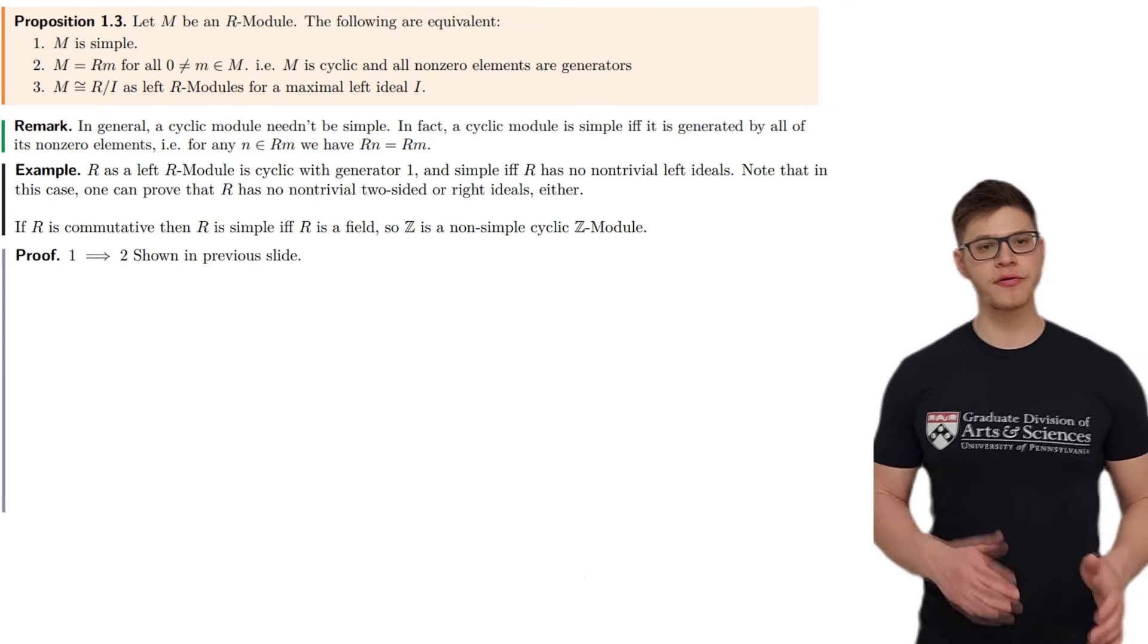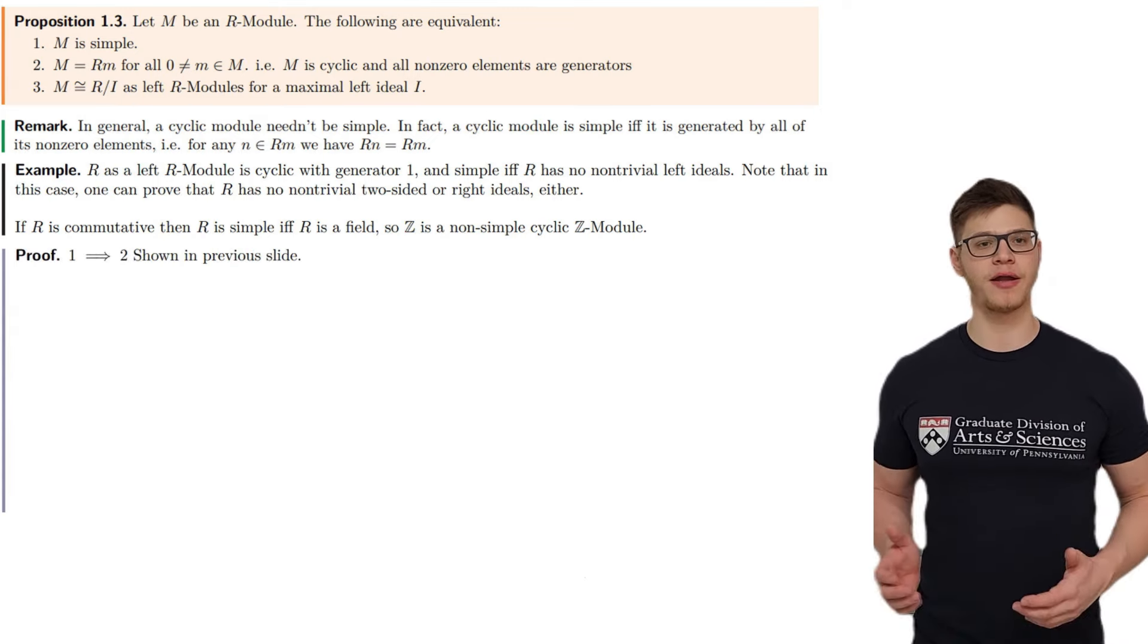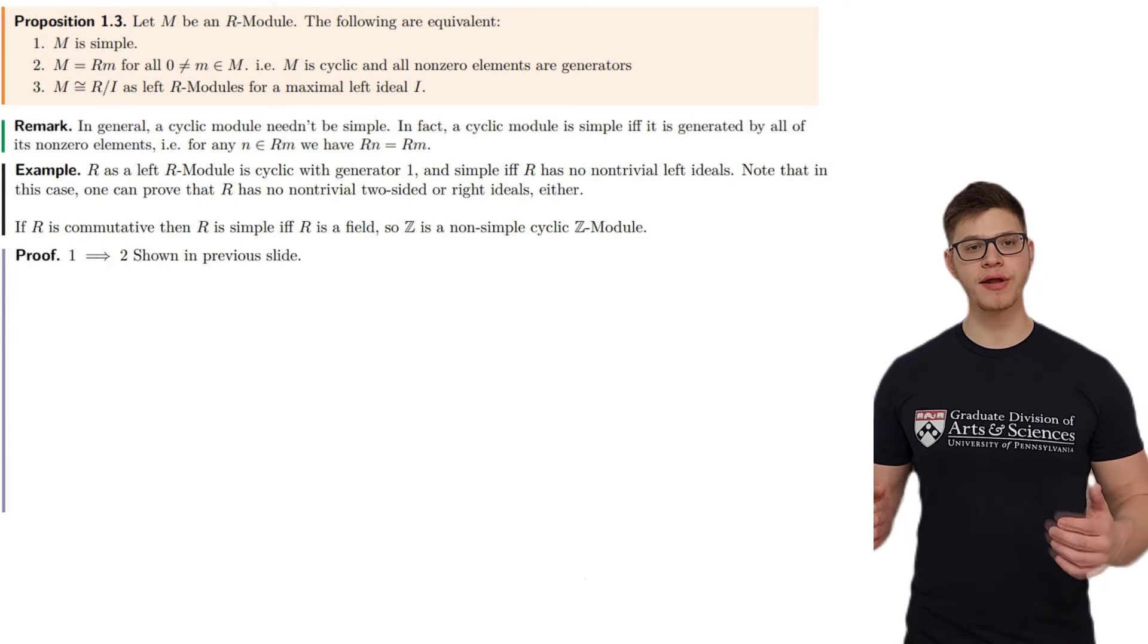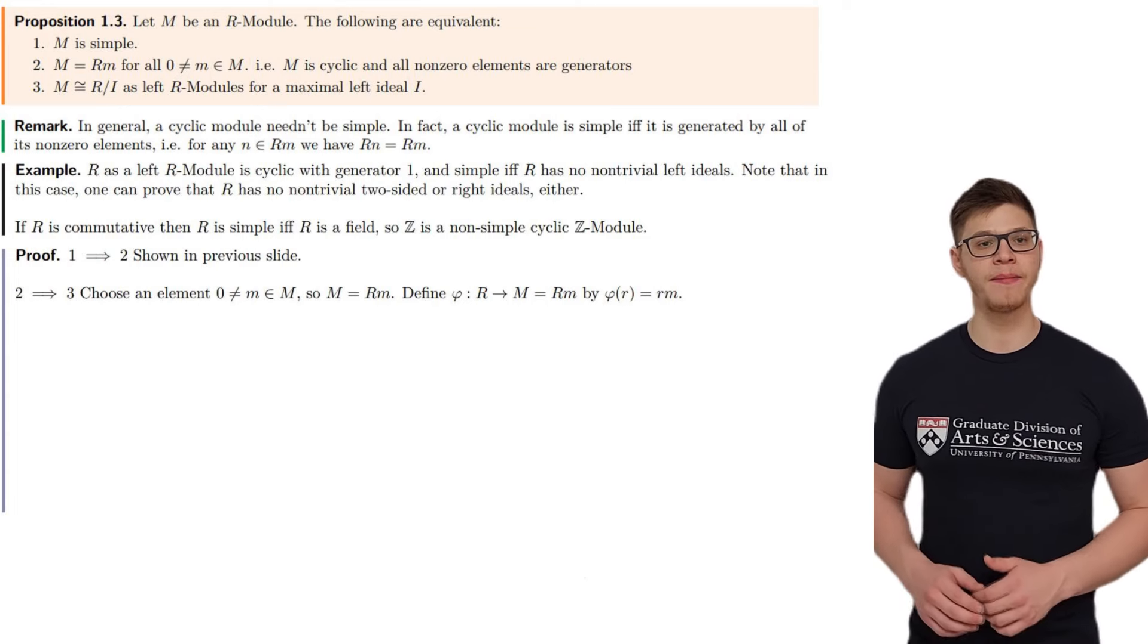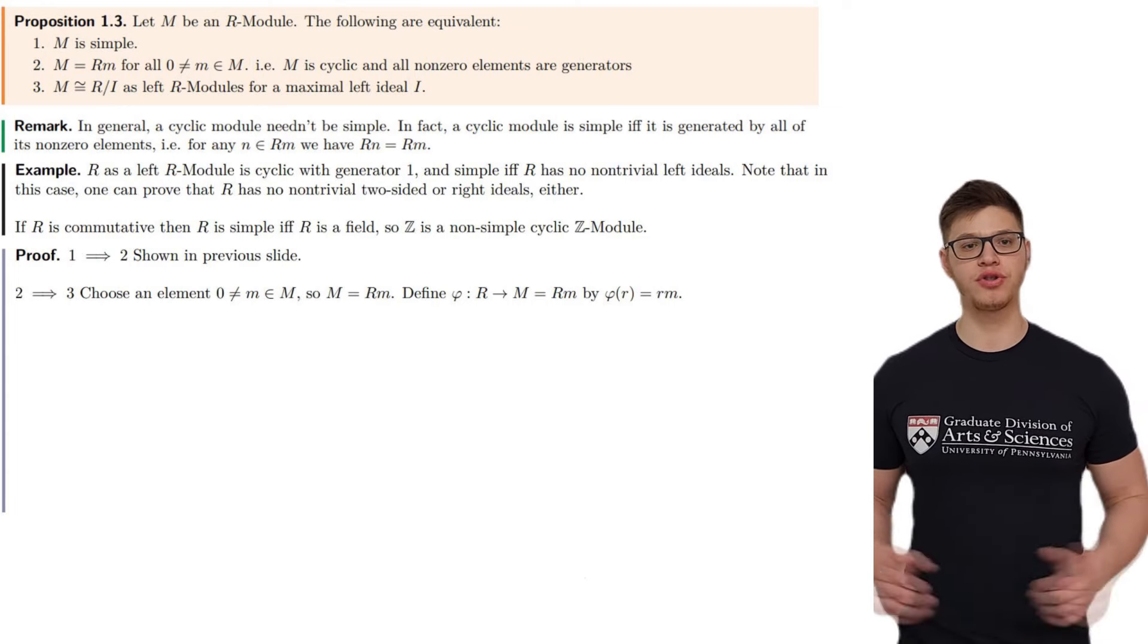We now prove the theorem. First, recall that we've shown 1 implies 2 in the previous slide, i.e., we've shown that a simple module is cyclic and all of its non-zero elements are generators. For 2 implies 3, choose a non-zero element m in our module M. Then, by hypothesis, the sub-module generated by m is equal to the entire module. Define a map phi from the base ring R to the module M according to this rule: an element r is sent to itself times m. Let I be the kernel of this map phi, and note that phi is surjective since m is a generator.